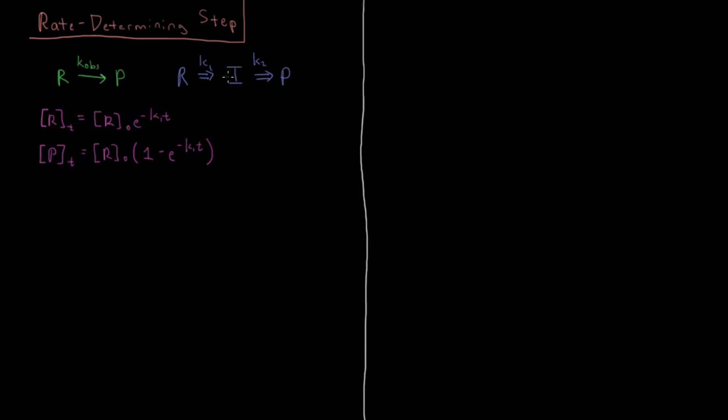So what about if we look at the alternative case where we have r, an intermediate, and our product. So in that case the time derivative of the concentration of r, well there's only one mechanism to get rid of that so it's going to be minus k1 times concentration of r.